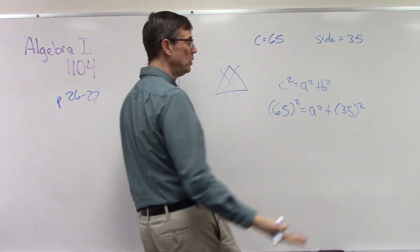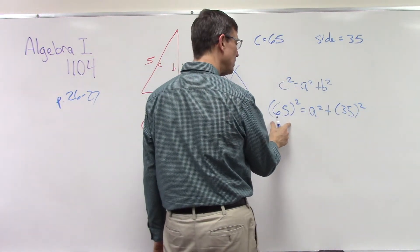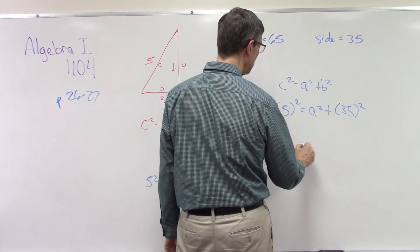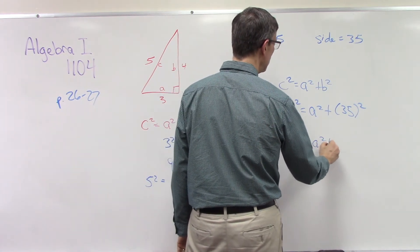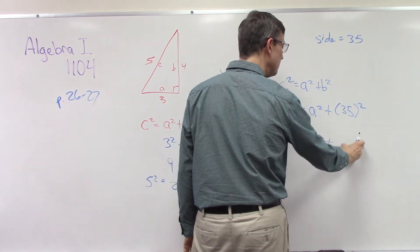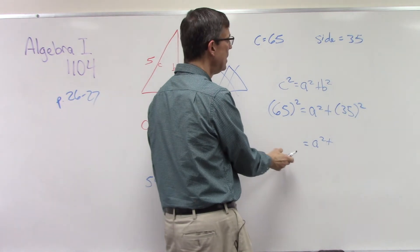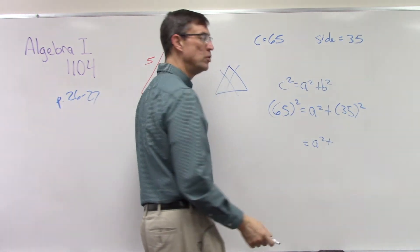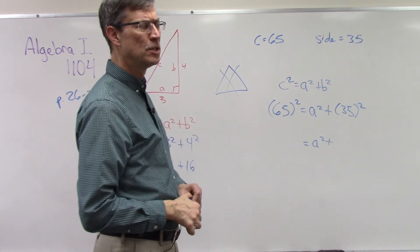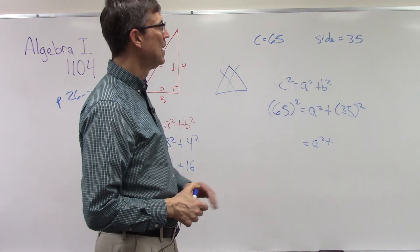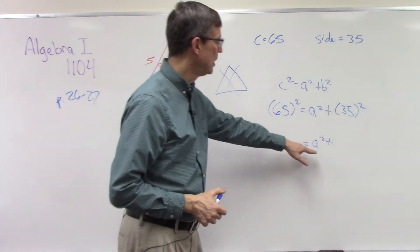Equals a squared plus, and then they maybe tell me that the other side is 35 squared. Now you can use your calculator to do this. So you'd multiply 65 times 65, get a number, equals a squared plus whatever 35 is, then subtract this from both sides. And then do the square root button on your calculator here, and you'll have the answer then for a.